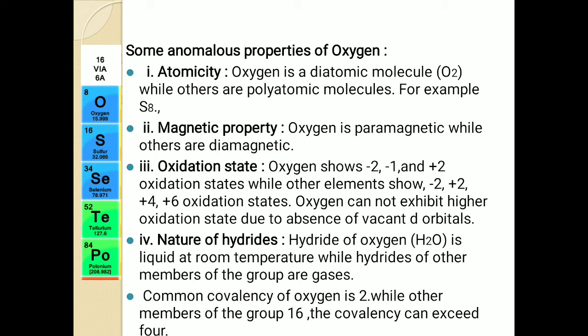The second anomalous property is magnetic property. Oxygen is paramagnetic while others are diamagnetic. What is paramagnetism? Paramagnetic means having unpaired electrons in the last shell. With the electronic configuration NS² NP⁴, and due to the absence of d-orbitals, the last p orbital has two unpaired electrons. That means they are attracted in a magnetic field, so oxygen shows paramagnetism while others show diamagnetism.